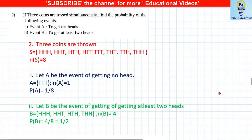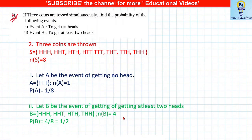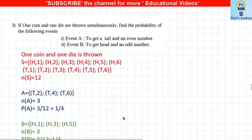Three coins are tossed; nS = 8. Event A: no heads means only tails — A = {TTT}, nA = 1, P(A) = 1/8. Event B: at least two heads means two or three heads — B = {HHH, HHT, HTH, THH}, nB = 4. P(B) = 4/8 = 1/2.